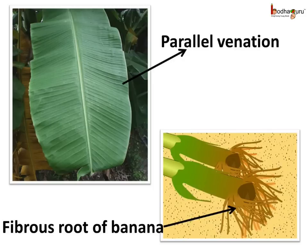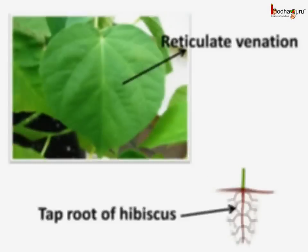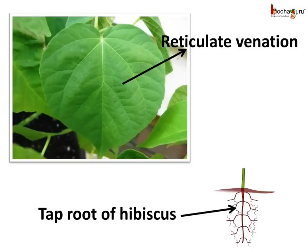Like here in the case of the banana leaf. In the plants with the tap root system, the veins form a net-like design on both sides of the midrib. This type of venation is called reticulate venation. For example, the hibiscus leaf has reticulate venation, so we can say the hibiscus has the tap root system.